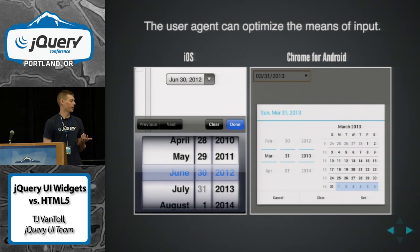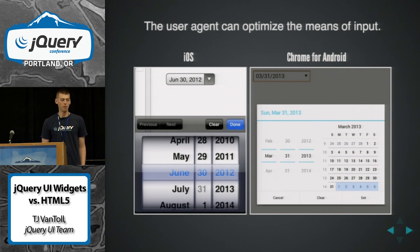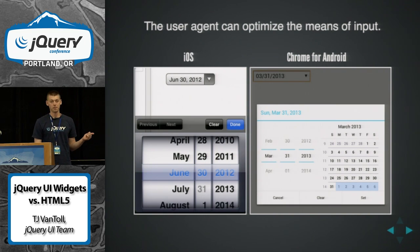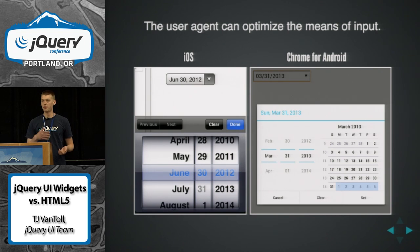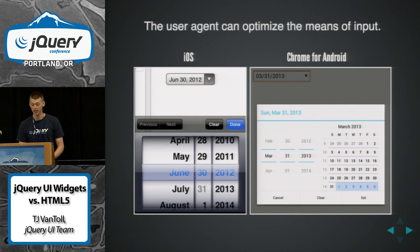The big one for native support is that by giving control to the browser to implement this control, the browser can customize and optimize how that data is collected. I have here what iOS and Chrome for Android do to implement these date pickers, and these are really nice. Not only is it easier for the user, but it's also the controls that the user is used to — basically the same control the OS provides natively. If you go into iOS's calendar, that's the same picker you're going to get when you use an input type date.